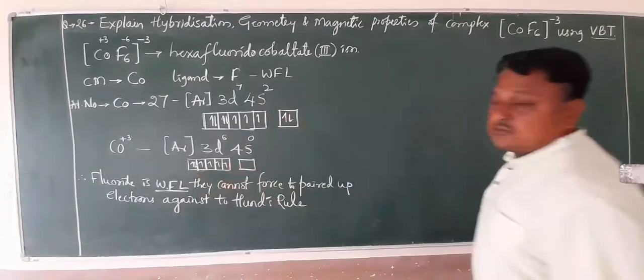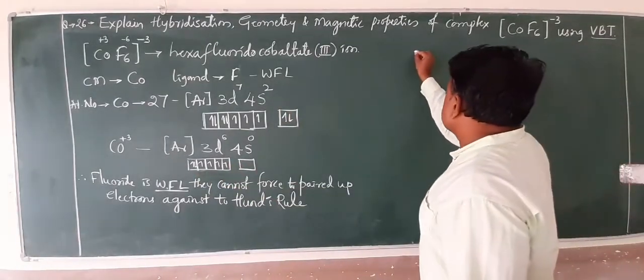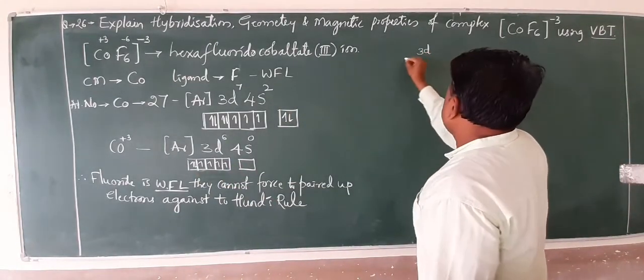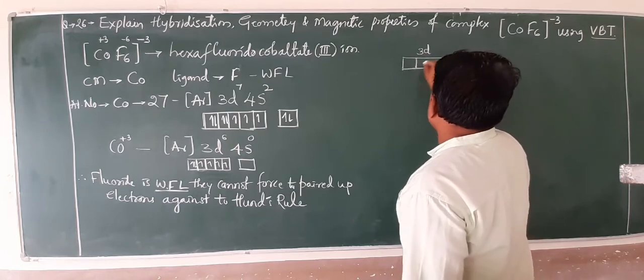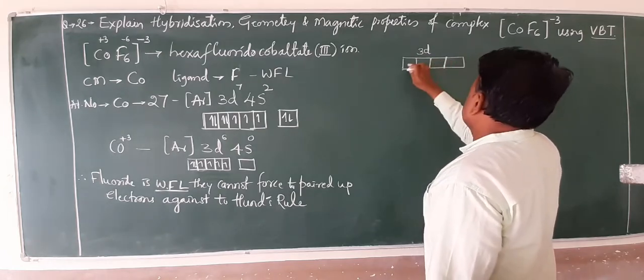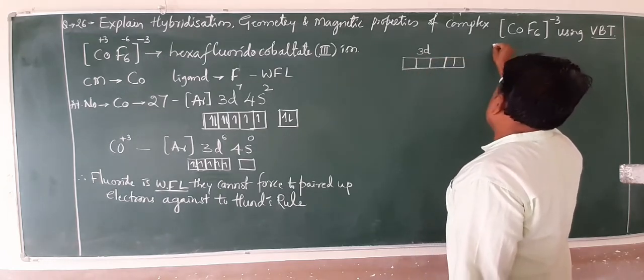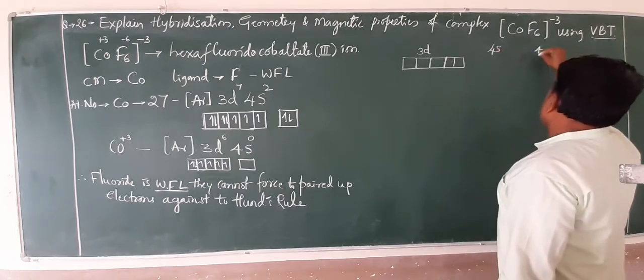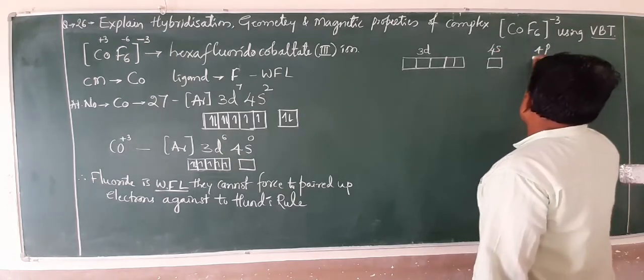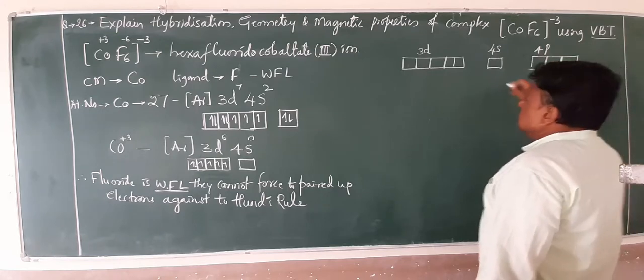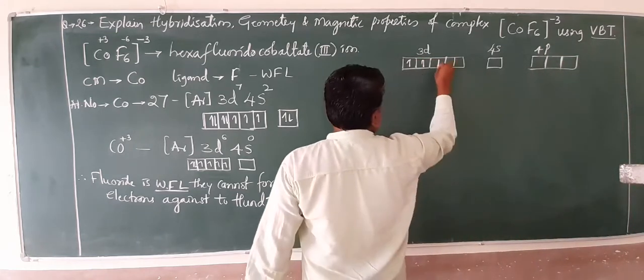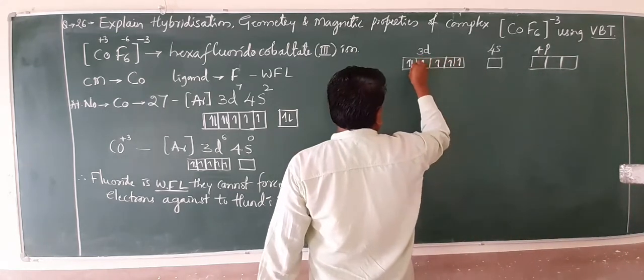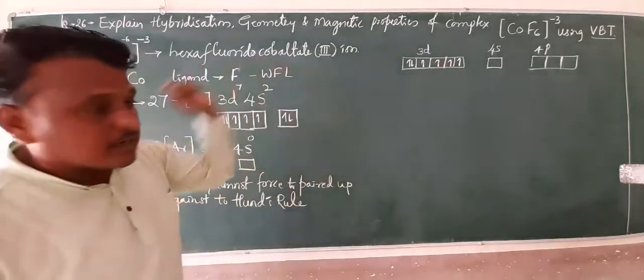This is fluoride, this is cobalt which is available in 3d totally, and this is 4s and 4p. 1, 2, 3, 4, 5, this is 6. There is no chance to pair it up.